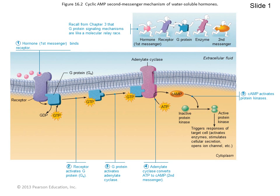There are two types of hormones: water-soluble and fat-soluble. Water-soluble hormones, which are amino acid-based — including peptides, proteins, and amino acid derivatives — act on plasma membrane receptors coupled to G protein. Upon hormone binding, G protein binds to GTP and activates adenylyl cyclase on the cell membrane, which converts ATP to cyclic AMP, which in turn activates protein kinases to produce cellular responses.